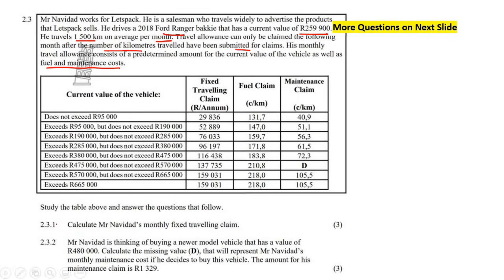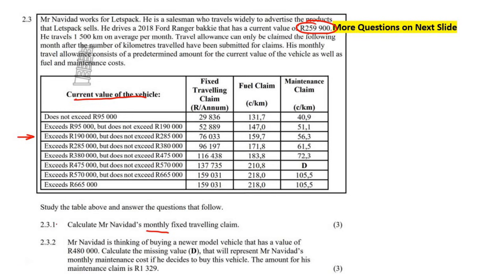Calculate Mr. Navidad's monthly fixed traveling claim. He has a fixed traveling claim — this is in rand but they want it monthly. His vehicle's current value puts us in the corresponding row of the table. The monthly fixed traveling claim figure there is 76,033 per annum — per year — so you divide that by 12 to get the per-month value.